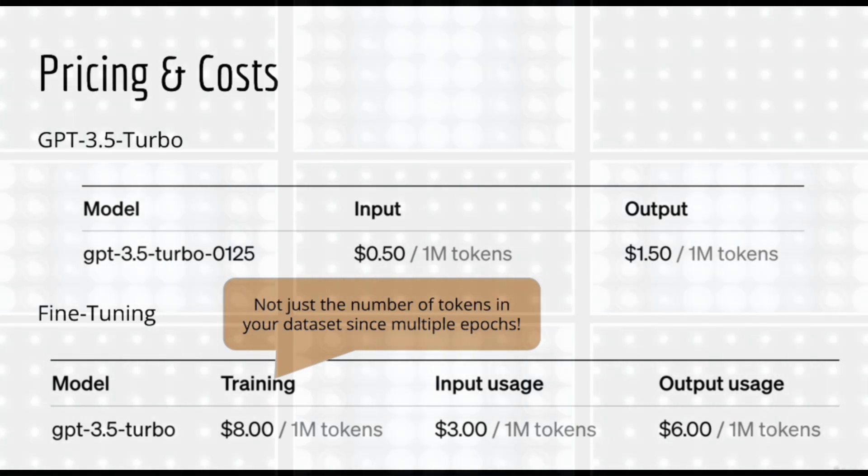During the training process, every token you look at in your training dataset will cost $8 per token. Note that, to compute this, you can't just count up the number of tokens in your dataset. You have to account for the fact that your model will see the same tokens multiple times. Recall that every epoch will loop through the entire dataset.